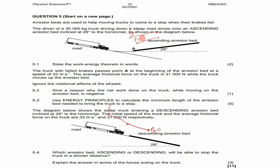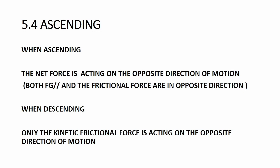The ascending bed will stop the truck in a shorter distance. On the ascending bed, both Fg parallel and the frictional force act in the opposite direction to the motion, so both forces slow the truck down. On the descending bed, Fg parallel acts down the slope in the same direction as motion, and only the kinetic frictional force opposes the motion. Two forces opposing motion are better than one, so the ascending bed stops the truck in a shorter distance.